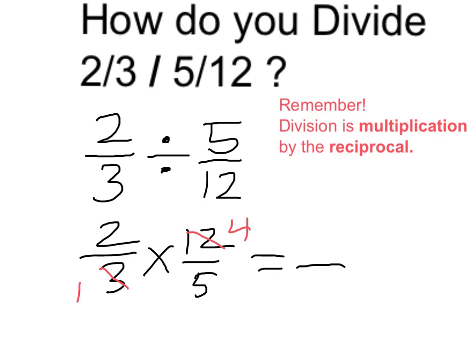Now if I multiply top times top, that's going to give me 8. And if I do the bottom times the bottom, that's going to give me 5.